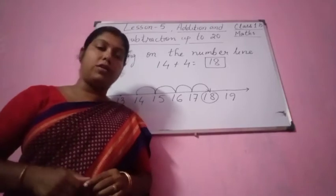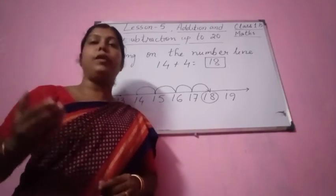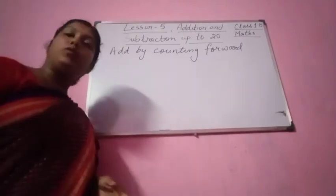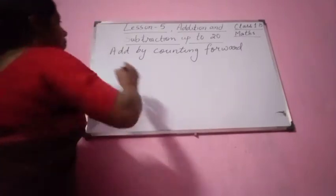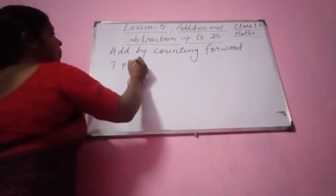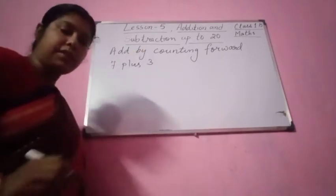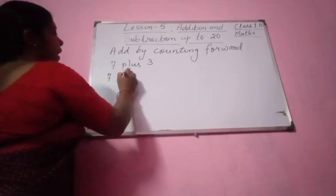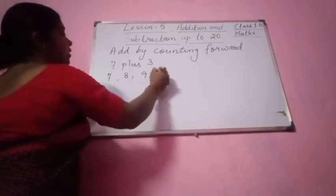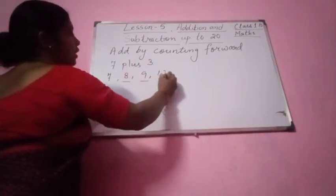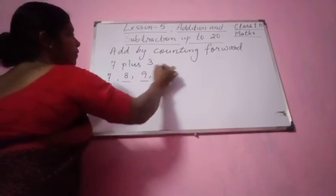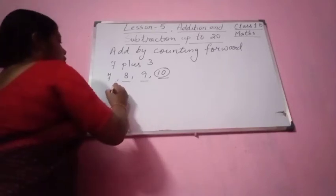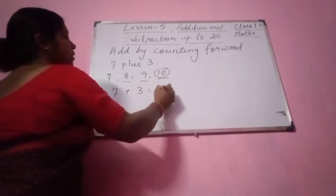Adding by counting forward. Now we are going to do adding by counting forward. So suppose we are adding here 7 plus 3. So you see here 7 plus 3 means: after 7 we are adding — 8, 9, 10 — plus 3, so 1, 2, 3. So what is the number? The final number is 10. So 7 plus 3 will be 10.